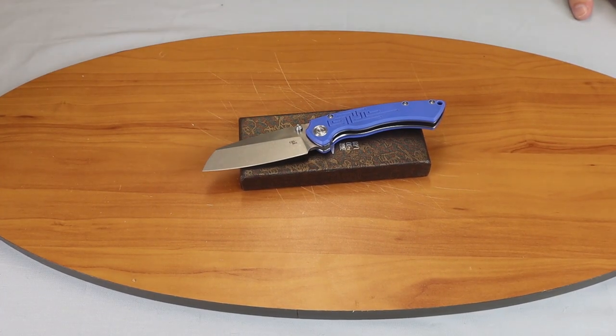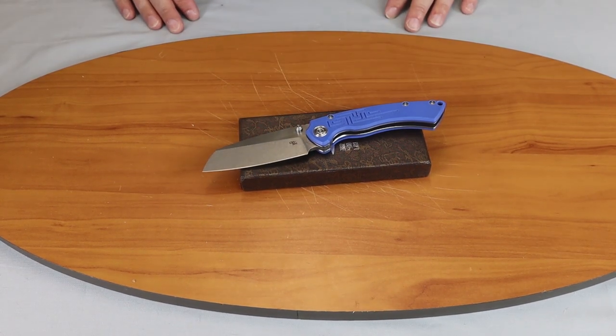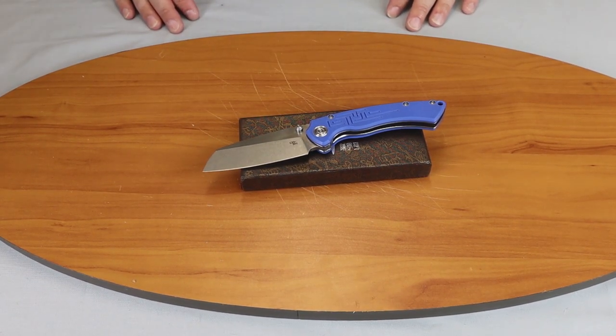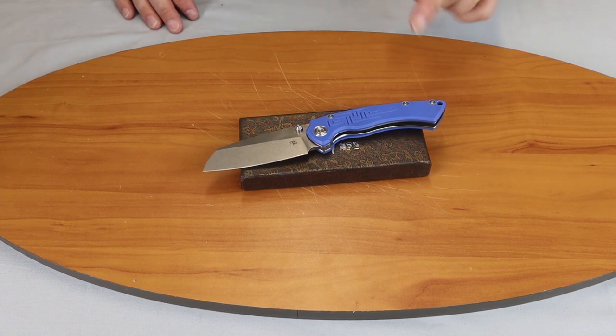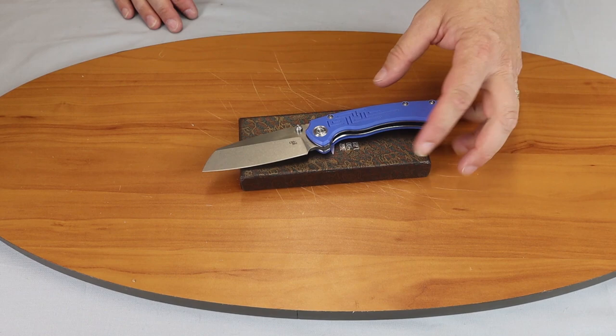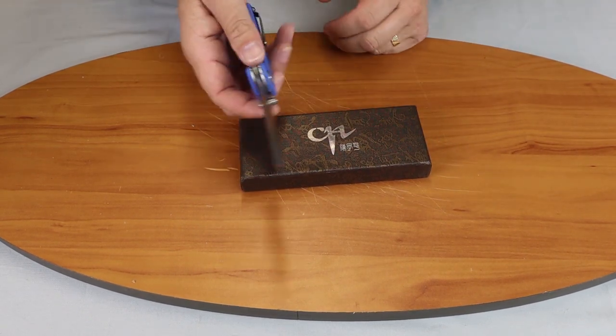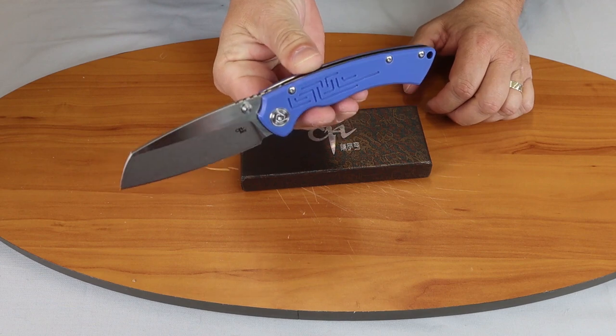And we're back with a knife review today. We're going to do the CH Knife Toucan. It is a blue G10 handled liner lock style knife. Let's go ahead and show it to you and talk about the specs.